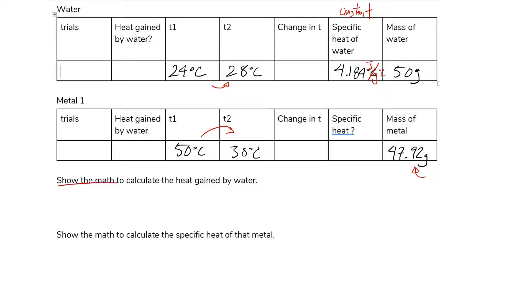The first question here is show the math to calculate the heat gained by water. The heat gained by water is here and that's going to be our Q. And if you recall, Q is equal to MC delta T. So let's just fill in the gaps here.